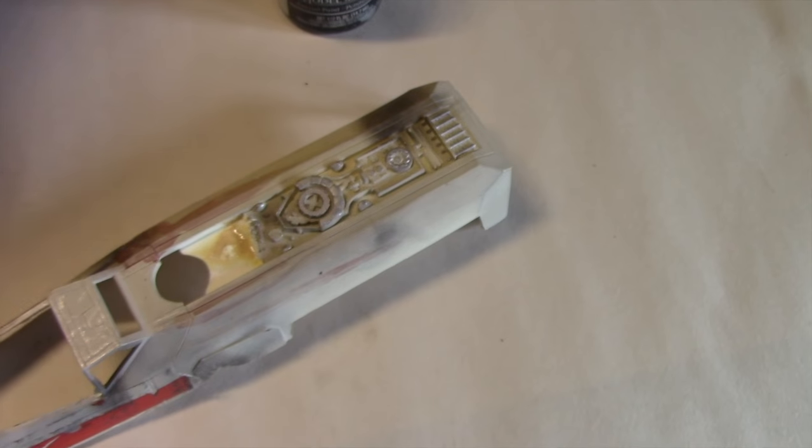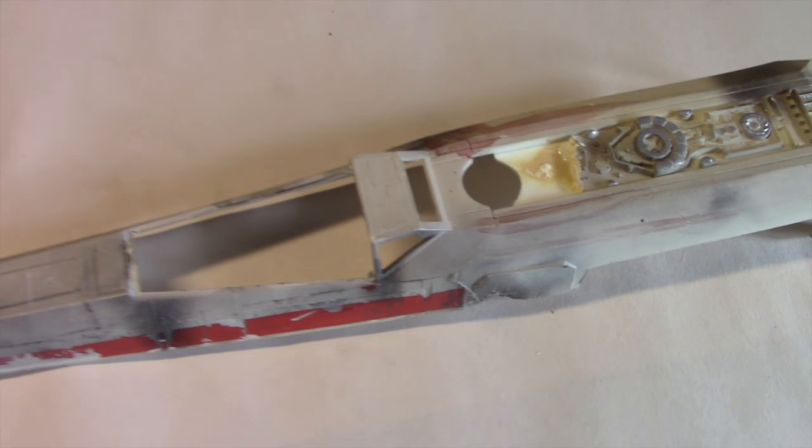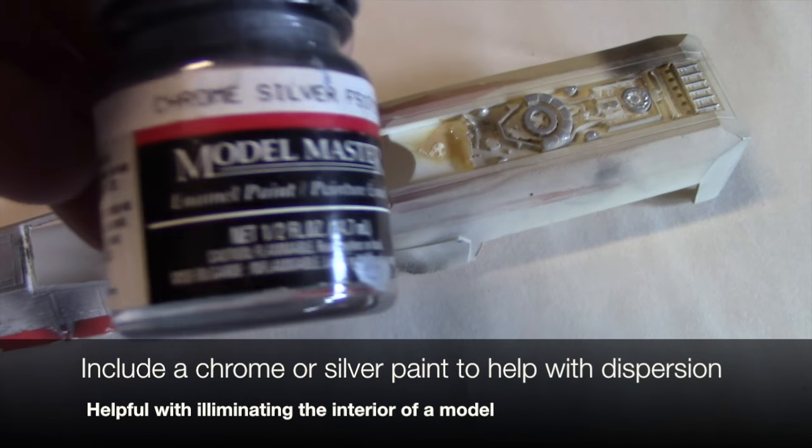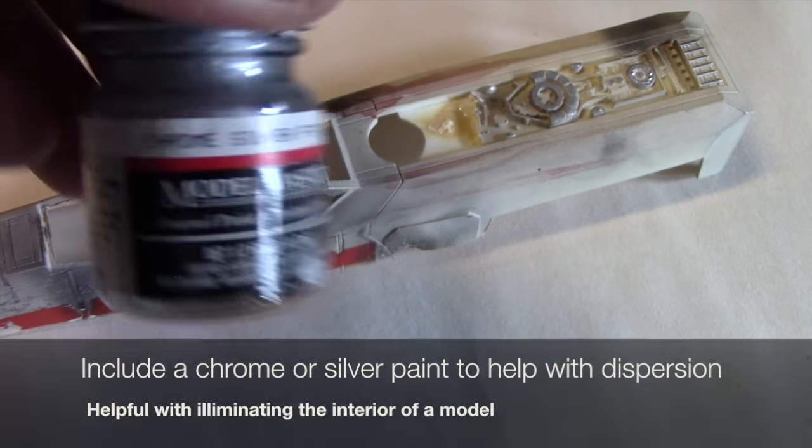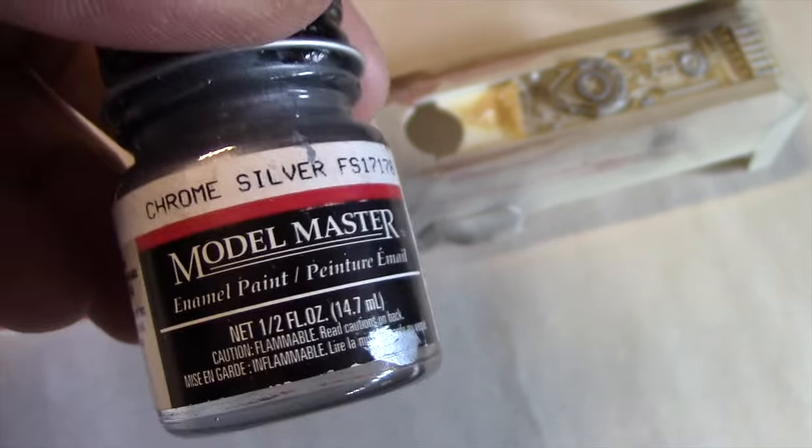Now suppose you're going to be lighting the interior like we did with the Colonial One. One thing you can do to help with light diffusion is to add over your light block coating a chrome silver. You can also apply this as your light block coating as well, but if you want extra coverage put the black and then add the chrome.